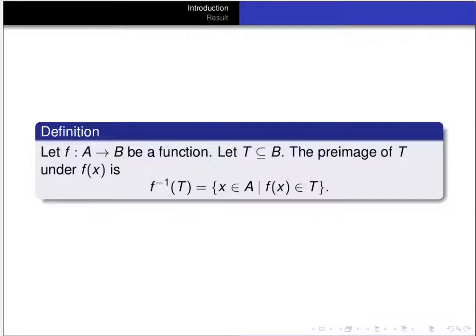If f is a function from A to B and T is a subset of B, so a subset of the codomain, then the pre-image of T under f is defined to be the set of all x in A such that f of x is an element of T. The notation for the pre-image of T under f is f-inverse of T. Keep in mind that just because we're using that symbol, it does not mean that the function is invertible — f to the minus 1 of T means the pre-image of T under f.